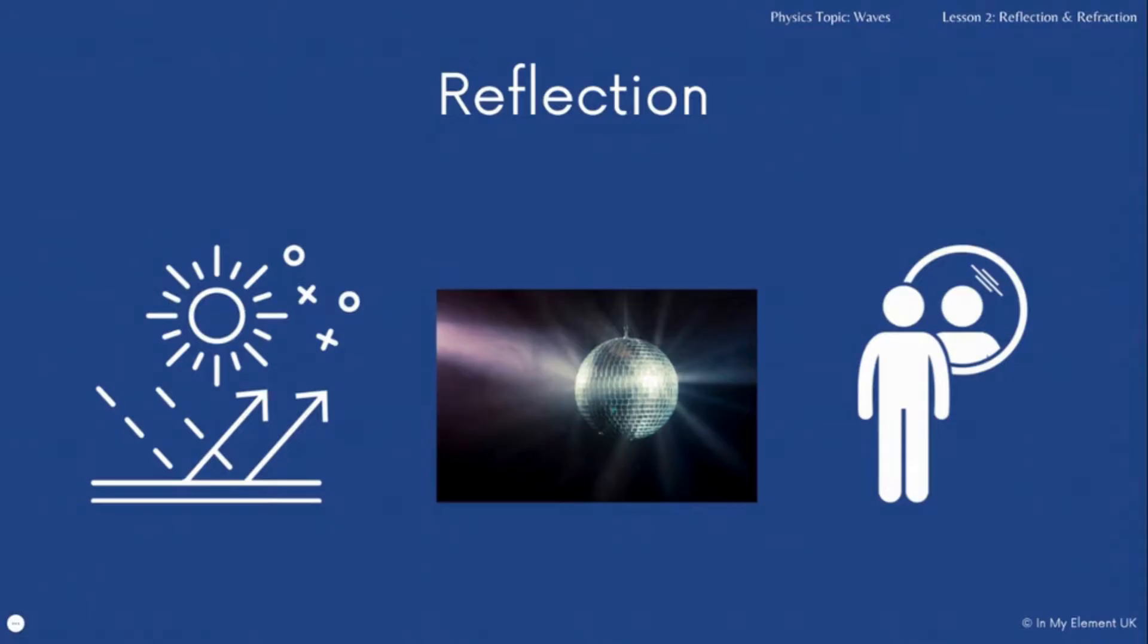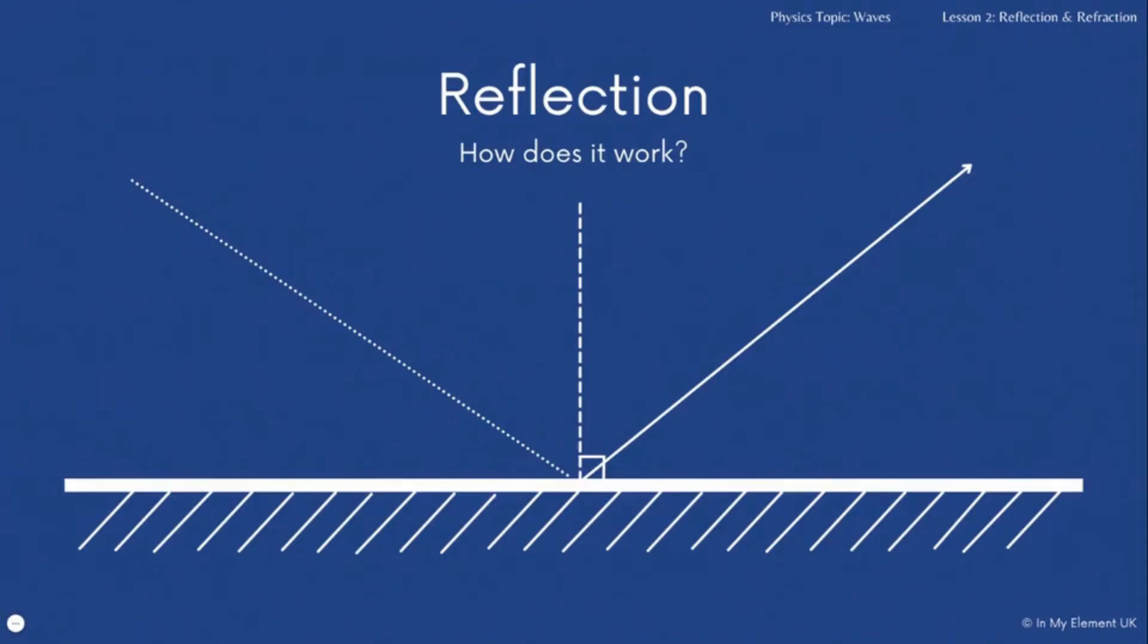You've got a diagram. The first one is showing reflection off the mirror. The other one is lots of tiny little mirrors making up a disco ball, which you'd be used to seeing with all the sparkles shining around a room as they spin round. And then the last one is someone looking at their reflection in the mirror.